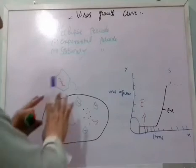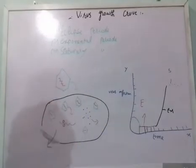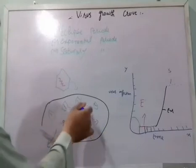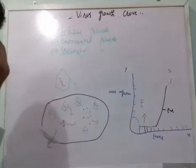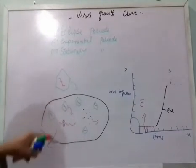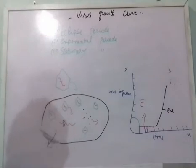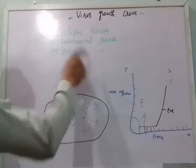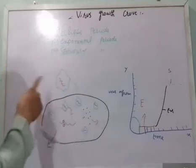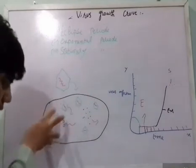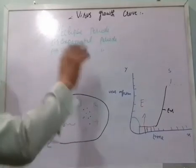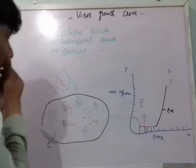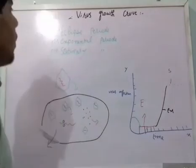When the virus attacks and releases its genetic material, this is called the Eclipse period. When the virus makes its copies — through DNA polymerase activity and protein production — this is called the Exponential period. Finally, when the virus puts pressure on the host membrane and all viruses are released from the host cell, this is called the Stationary period.